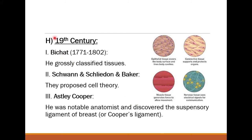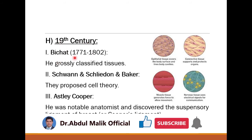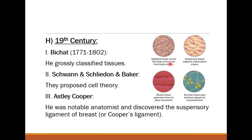In the 19th century, Bichat grossly classified tissues — for example, epithelial tissues, connective tissues, muscle tissues, and nervous tissues. Schwann, Schleiden, and Baker proposed cell theory. Schwann cells, found in the peripheral nervous system, were also discovered during this period.